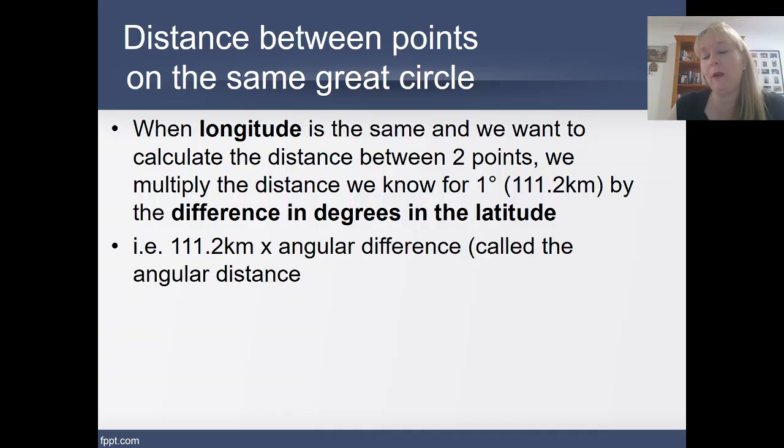So we need to multiply that magic number by the distance between those two points in terms of their angles. You'll notice that their coordinates are given as degrees.